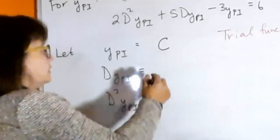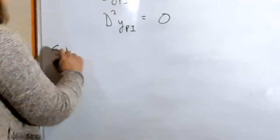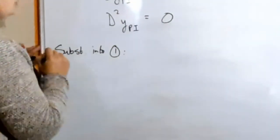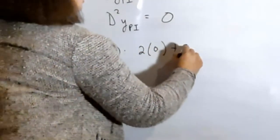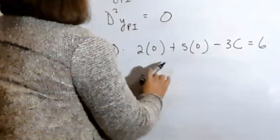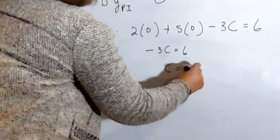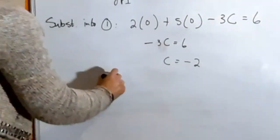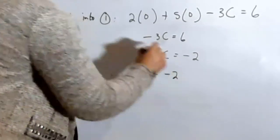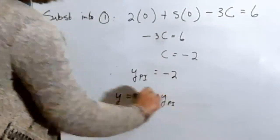That means the first derivative is zero and the second derivative is also zero. Substituting into the equation gives: two times zero plus five times zero minus three C equals six. Solving for C gives C equals minus two, which means the particular integral ypi equals minus two. Now we have a full solution for y.